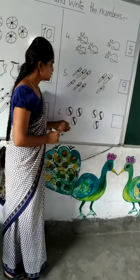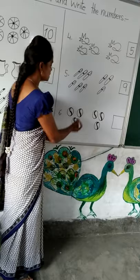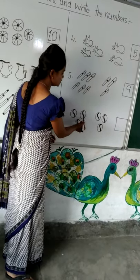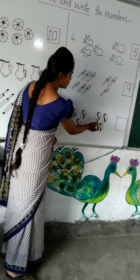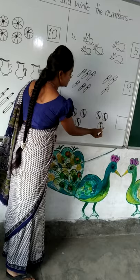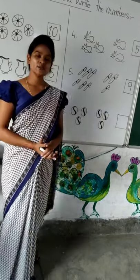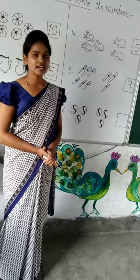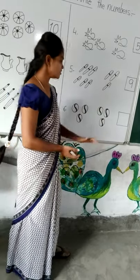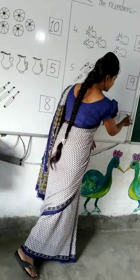Come to this picture. We will count. 1, 2, 3, 4, 5, 6. How many pens are there? There are 6 pens. We will write 6 in the box.